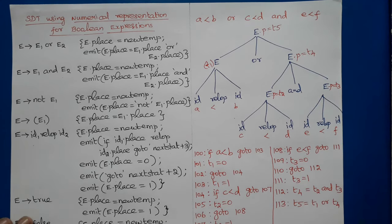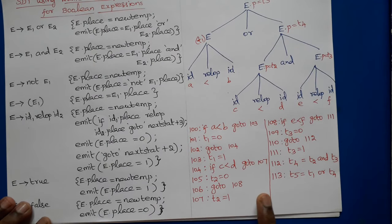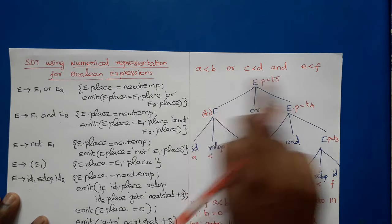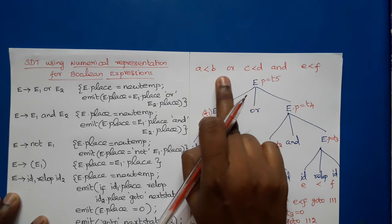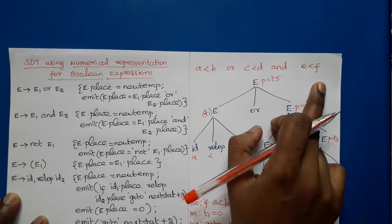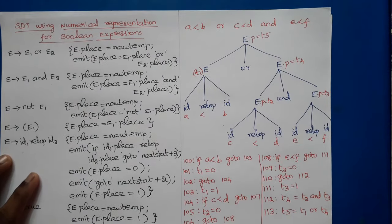This is the complete sequence of three-address statements for the given expression A < B OR C < D AND E < F. Thank you.